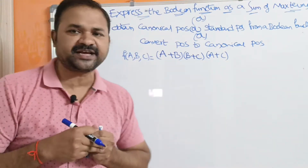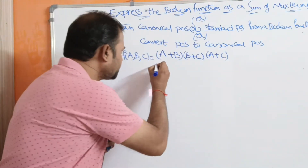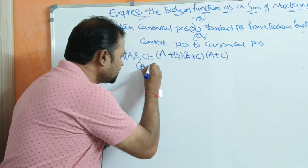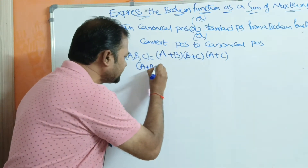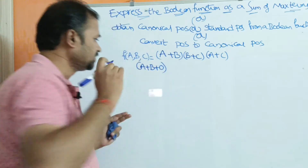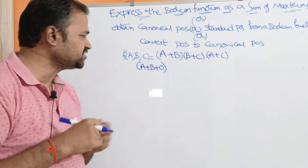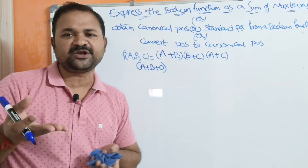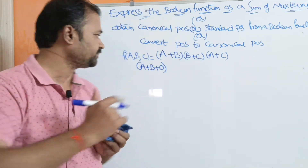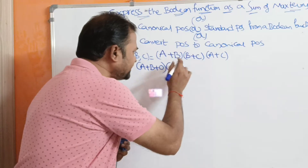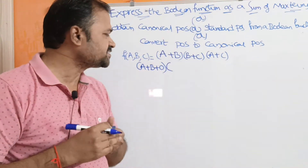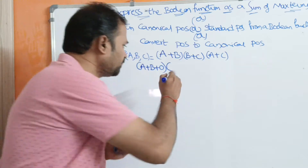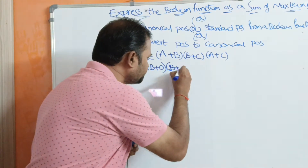If we consider the first term, C is missing. In order to obtain C, what we are doing is adding 0. We are performing our OR operation with 0. By adding 0, the result won't change — A plus 0 equals A only. Likewise, if we consider the second term, A is missing. In order to obtain A, we have to add 0, giving B + C + 0.